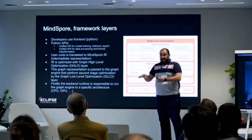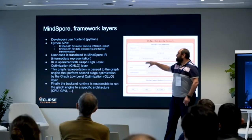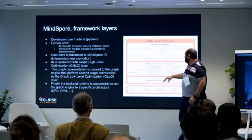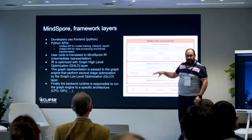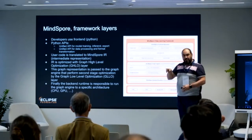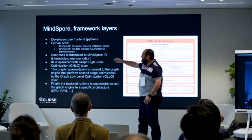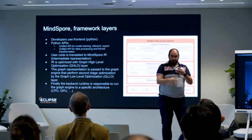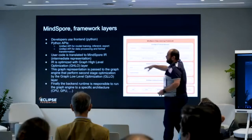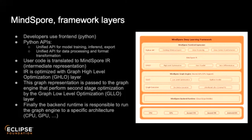To have a model, you create it or train it — that's where you use the framework. The framework has three main layers. The first is the front end — the Python code you write. In these Python APIs there are two levels: the first is a unified API for model training, where you train, create, and export models. The second API is about data processing and format transformation.